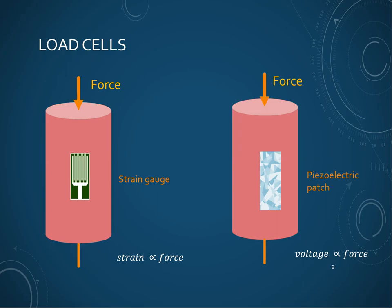Load cells are another class of vibration sensors used to measure forces. There are two main types: strain gauge load cells and piezoelectric load cells. The scales we have at home or at the gym are generally made from strain gauge type load cells. The physics are straightforward — strain is directly proportional to force in strain gauge load cells, and voltage is directly proportional to force in piezoelectric load cells. If you know the calibration factors, you multiply by the voltage to find the forces.